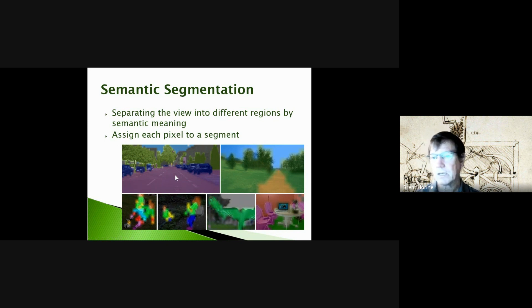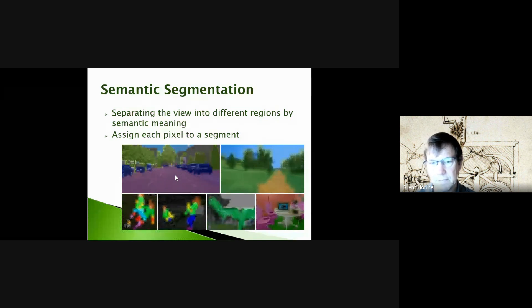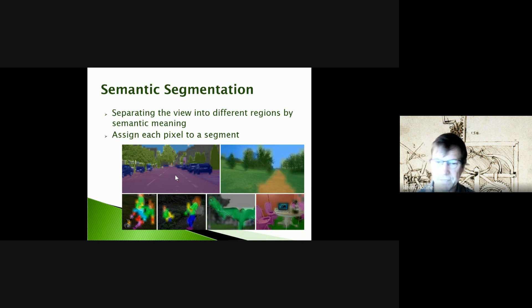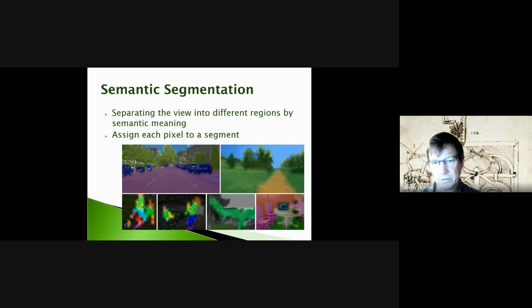Here we're using color to indicate how each pixel is mapped to a segment. We'll have some number of segments, and for human visualization we'll assign each segment a color and map the pixels accordingly. We call this semantic segmentation because we're assigning meaning to these regions.